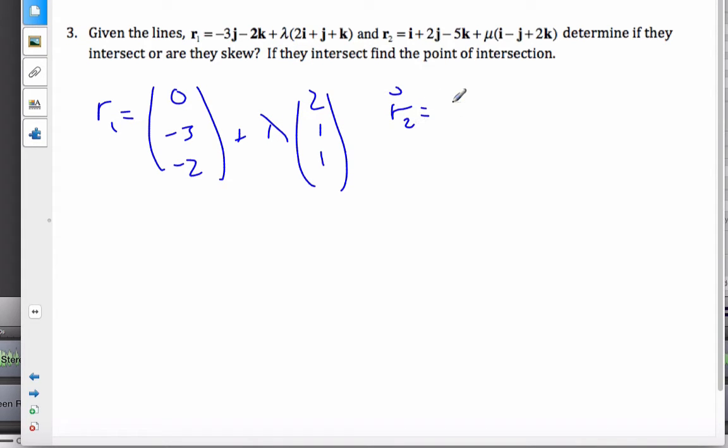The second line is 1, 2, negative 5 plus mu, 1, negative 1, 2. Now, if I look at the direction vectors quickly, that's just confirmation that they are not parallel since they're not scalar multiples. Now, if I want to find the point of intersection or if they're skew, I need to make simultaneous equations.